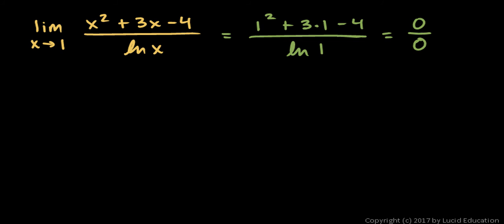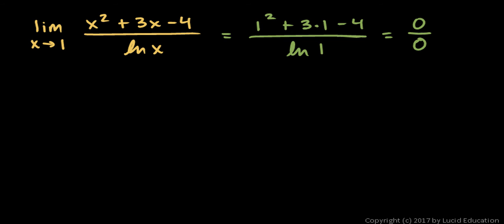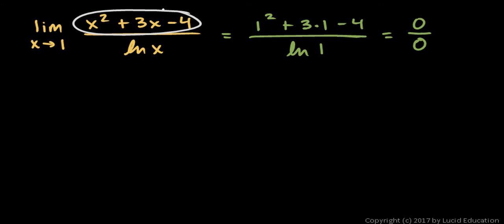Up to this point, when we've tried to evaluate limits and get something that evaluates to 0 over 0, the typical approach is to try to simplify the expression, and then hopefully the simplified expression can be evaluated for that value of the variable. In this case, though, this doesn't simplify easily. We see a quadratic in the numerator, and even if we can factor it, we're not going to factor out a natural log of x. So this doesn't simplify easily.